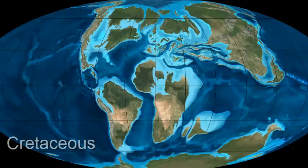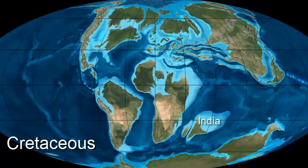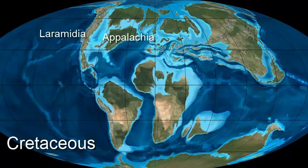Now we jump forward to 90 million years ago, to the Cretaceous period. Here we see all the continents are now isolated — even India, a land mass that we don't think of as a continent, is isolated in the middle of the Indian Ocean. And look at North America: as it moved west, the Sevier orogeny formed a large mountain range, but it rippled like folds in a rug pushed along the floor. A low basin has flooded with the sea, splitting North America into two continents — Laramidia to the west and Appalachia to the east.